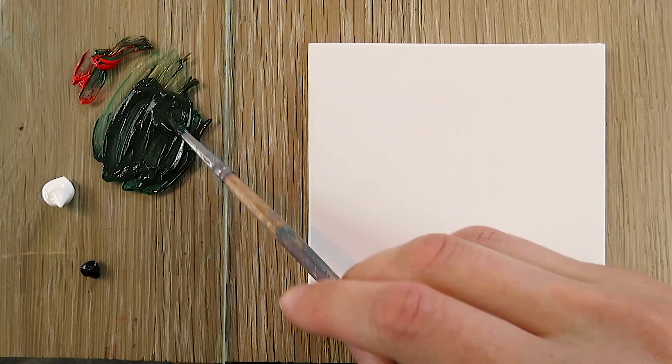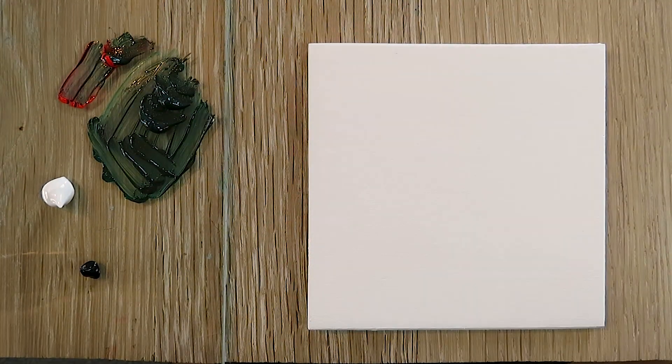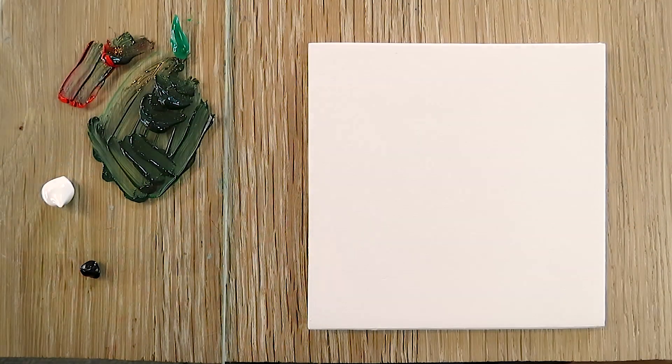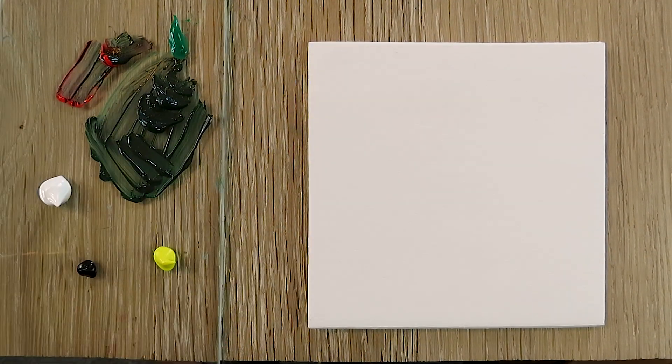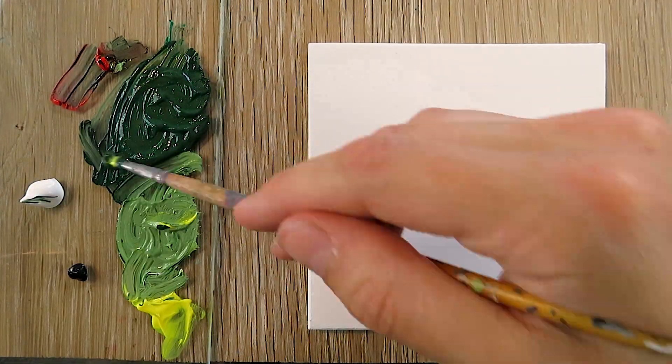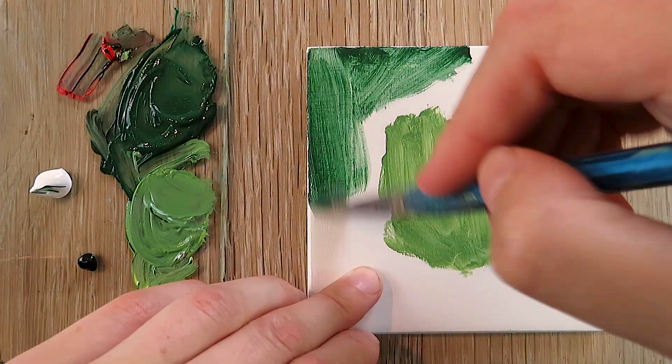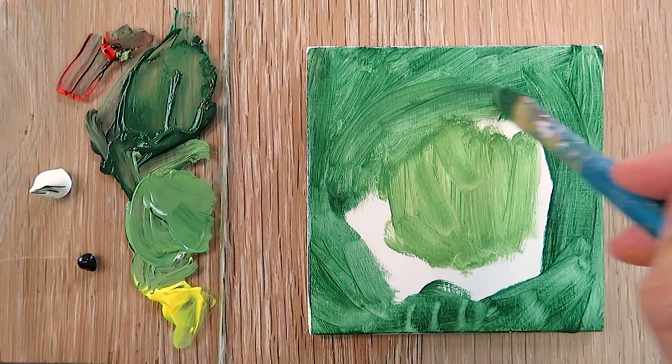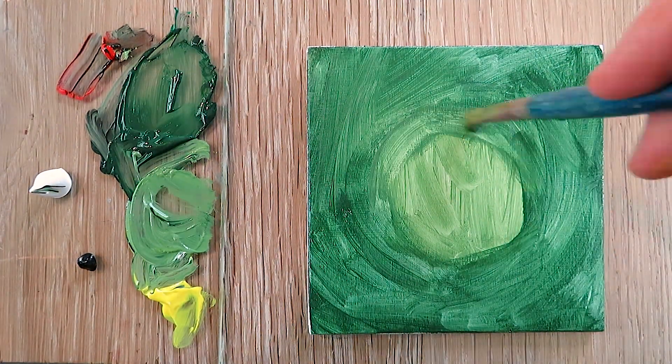To get an olive green color, we mix permanent green with a little bit of cadmium red. This is the dark green. For the middle, we pick a little bit of our dark green and add white as well as lemon yellow to it. Then we apply those two colors to the panel—the brighter color in the middle and the darker one at the edge.